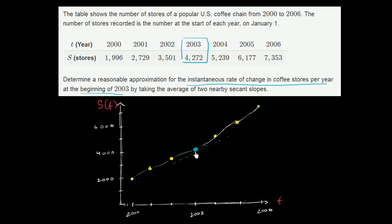Now, they say approximate. We don't have the information to figure out it exactly. But we have some data around it. And we can figure out the slopes of the secant lines between this point and those points. And then we can take the average of the slopes of the secant lines to approximate the slope of this tangent line.